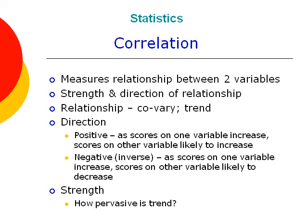Three key terms in a discussion of correlation are relationship, direction, and strength. By relationship, I mean that two variables share a trend, or that they co-occur. It means that as one variable changes in value, the other variable also tends to change.